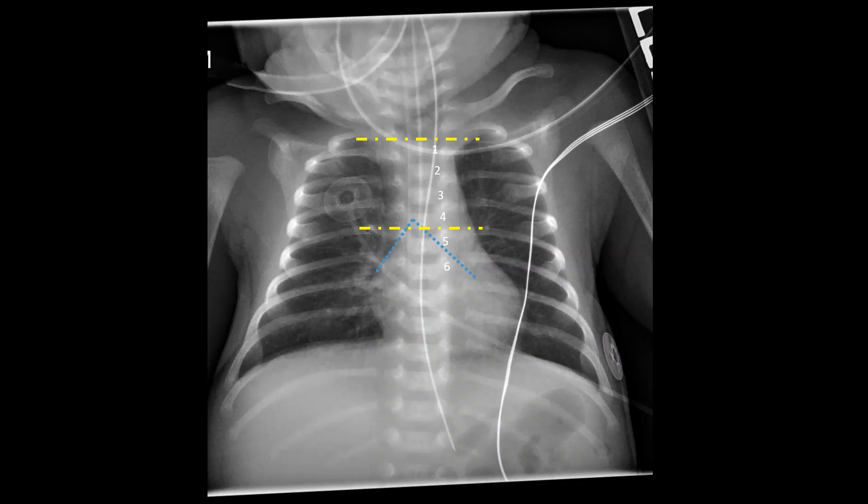Luckily, it was recognized relatively quickly and the tube was removed and replaced. One problem with esophageal intubation is that clearly you're going to have very poor ventilation — the lungs will not be ventilated. You will also start to see progressive gastric distension, which predisposes the patient to reflux and aspiration. And if substantial enough gas fills the bowel, you can also get worsening abdominal distension and hypotension due to increased pressure within the abdomen that reduces venous flow.